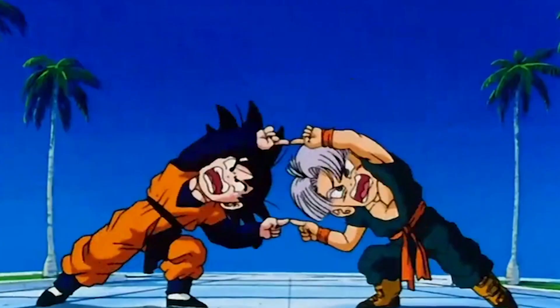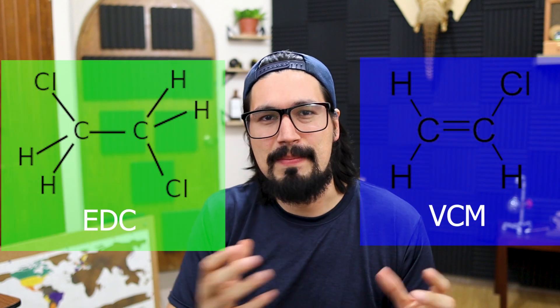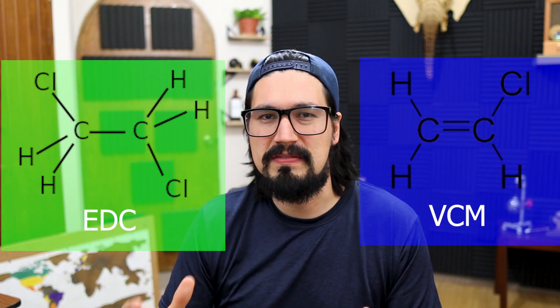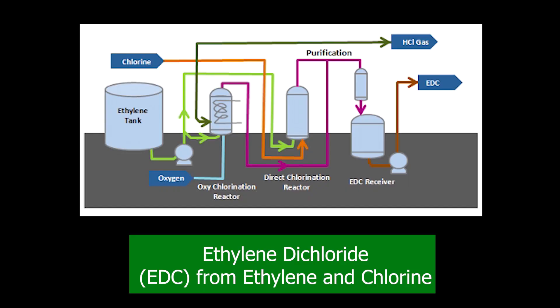Combining ethylene and chlorine produces ethylene dichloride (EDC). EDC itself is not the main product of interest, but it serves as the precursor to vinyl chloride monomer — the monomer of PVC.